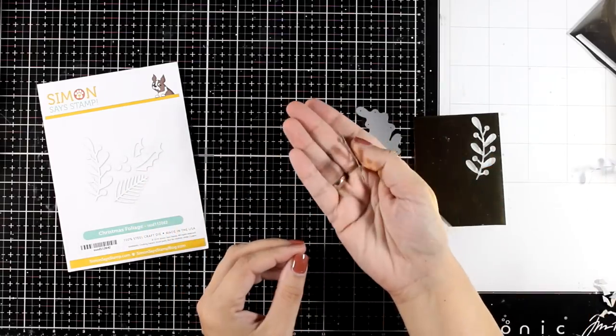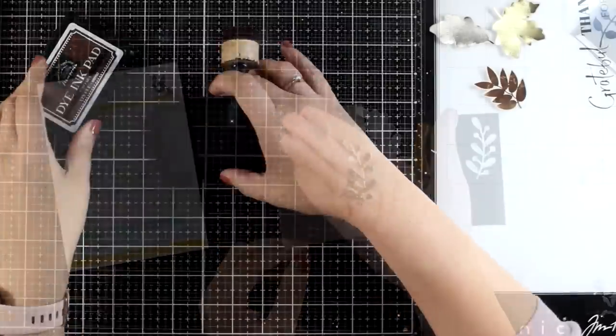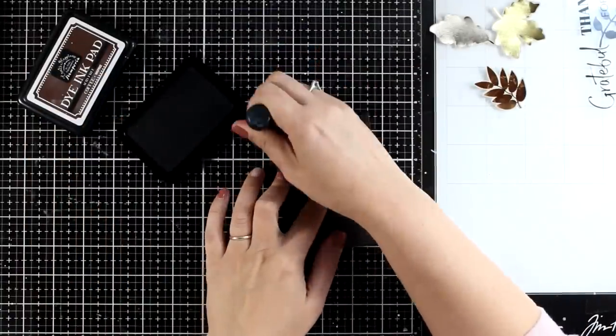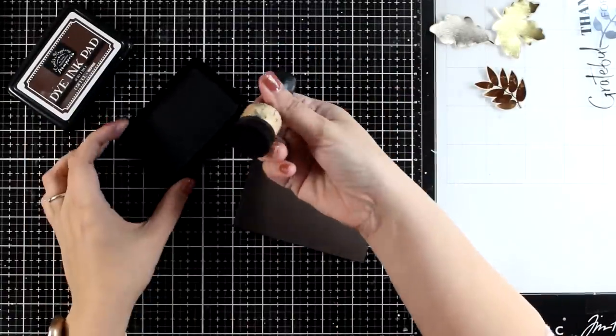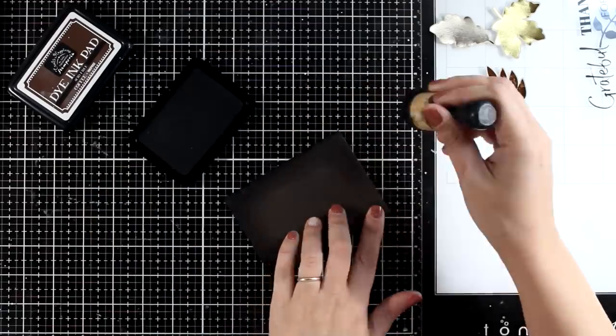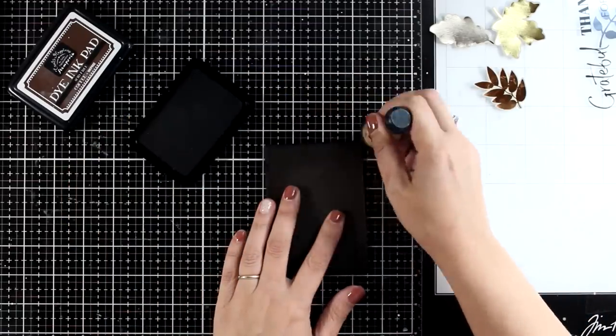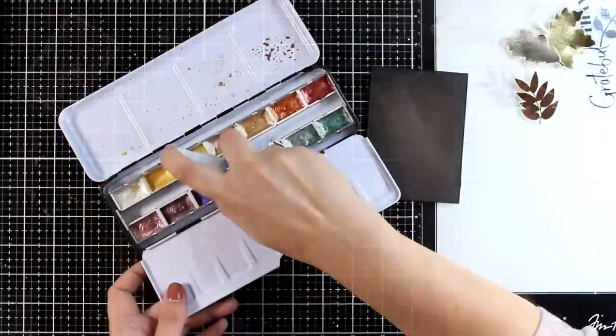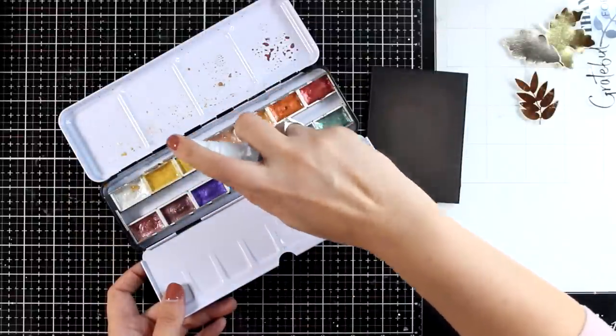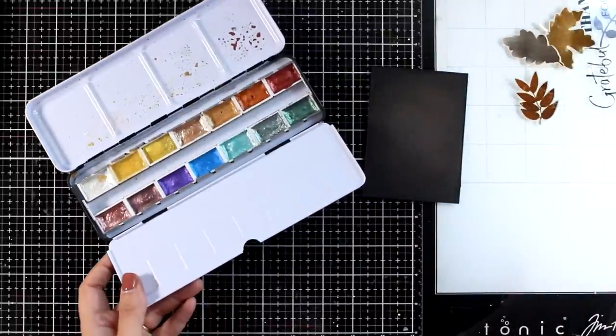So anyway, back to the leaves that I created in the beginning. I am going to create a card with them. I have a dark brown panel here and I'm inking up the edges just to make sure that they are darker. They always help the center to bring the eye at the center more.